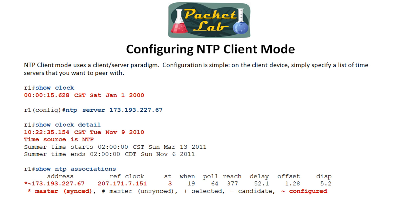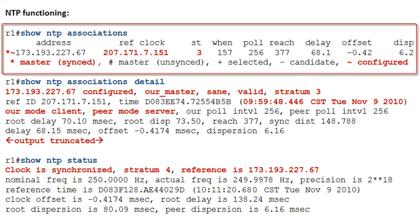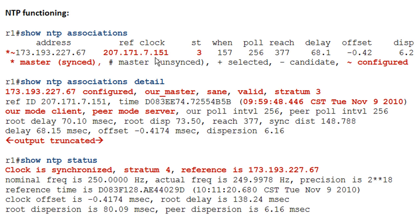For a lot of NTP configurations, that's really it — a single line pointing it to a device that will give accurate time. There are really only two NTP verification commands: 'show NTP associations' and 'show NTP status.' You can get more information by adding the 'detail' keyword to 'show NTP associations.' The associations output shows the address, stratum, and where it's getting time from. You'll also see 'selected' and 'candidate' come into play when you have multiple NTP servers configured. From a design standpoint, you want at least two — so if you lose one, another can jump in.